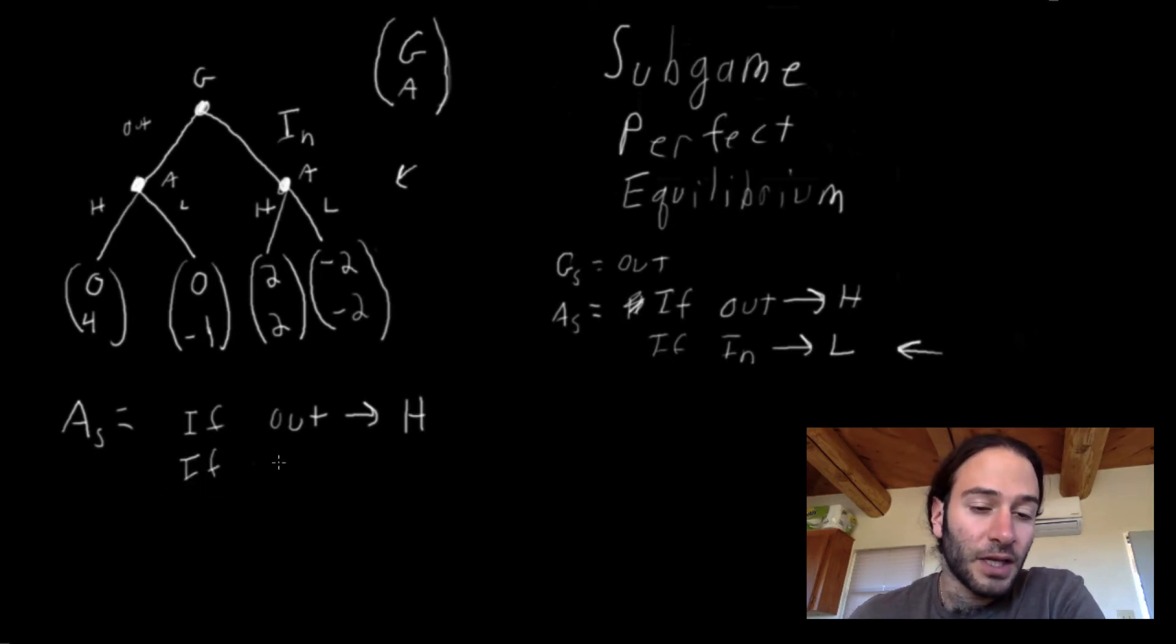If Google plays in, what does Apple do? Well, does it prefer two or negative two? If we actually got to this decision node, we know that Apple would play H because that is the best thing for it.